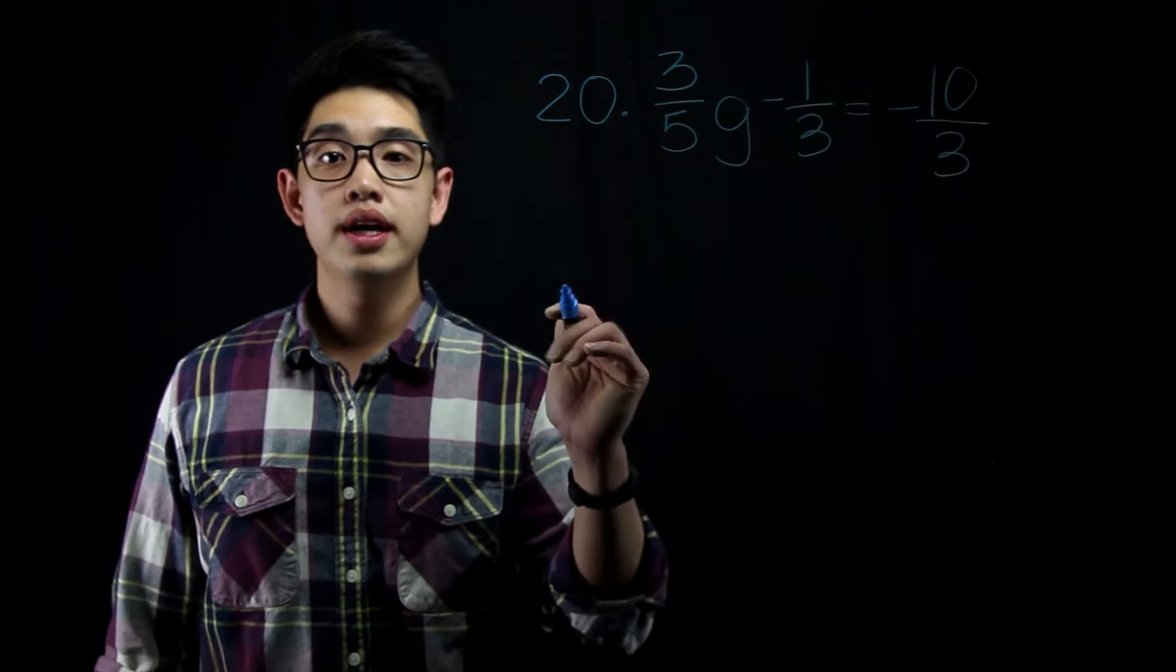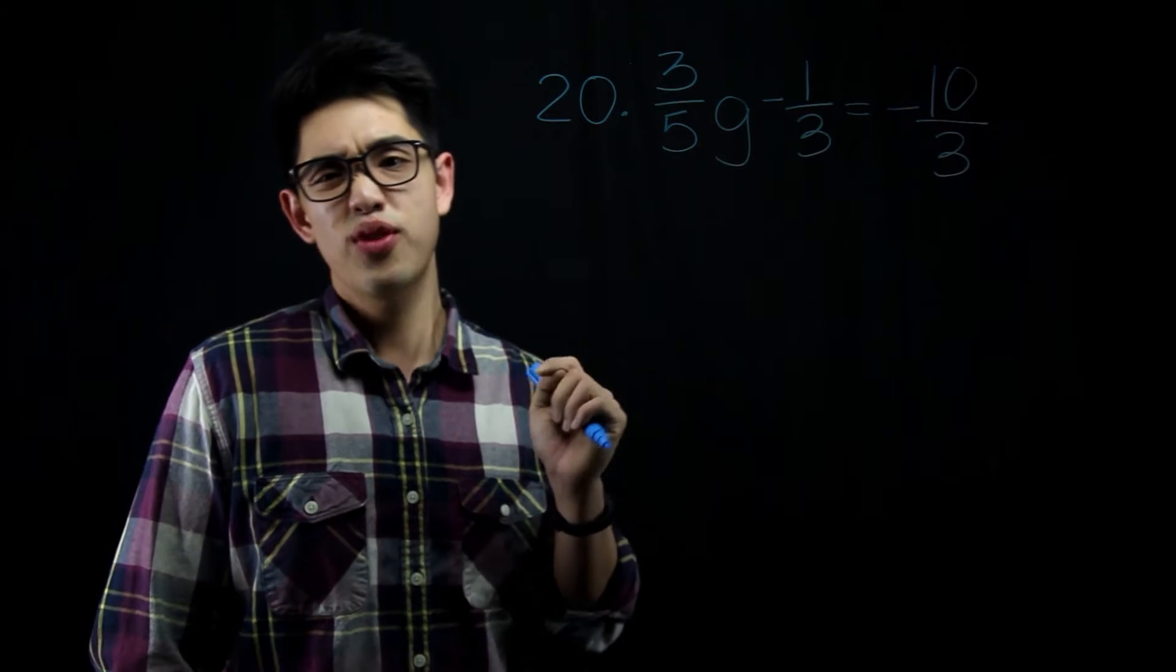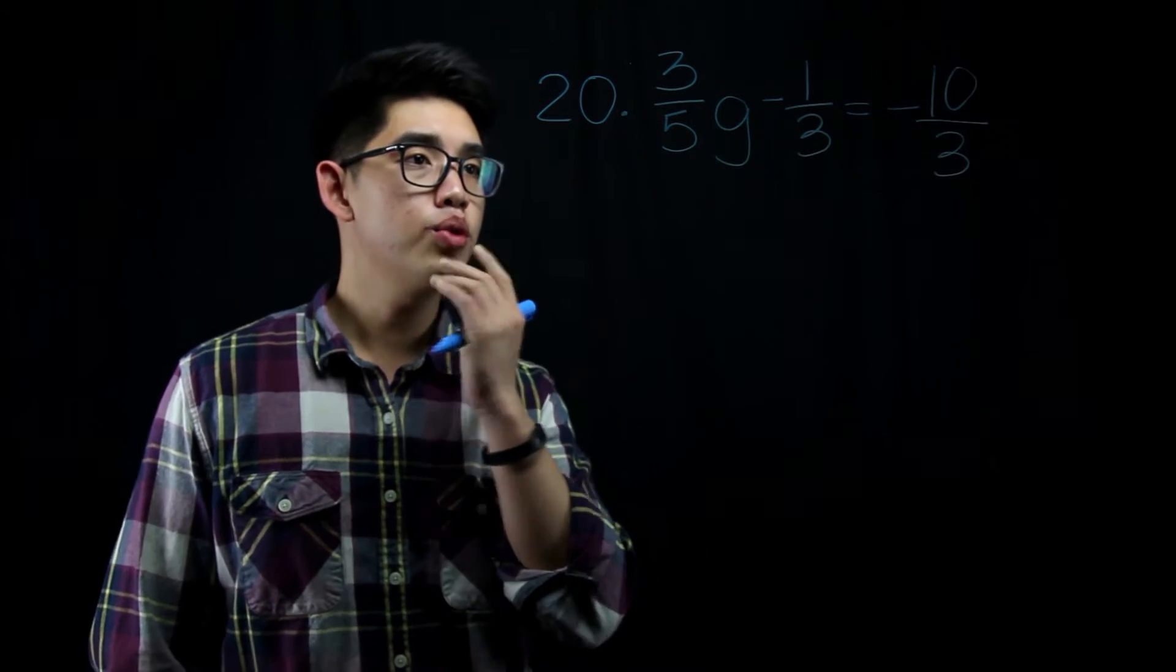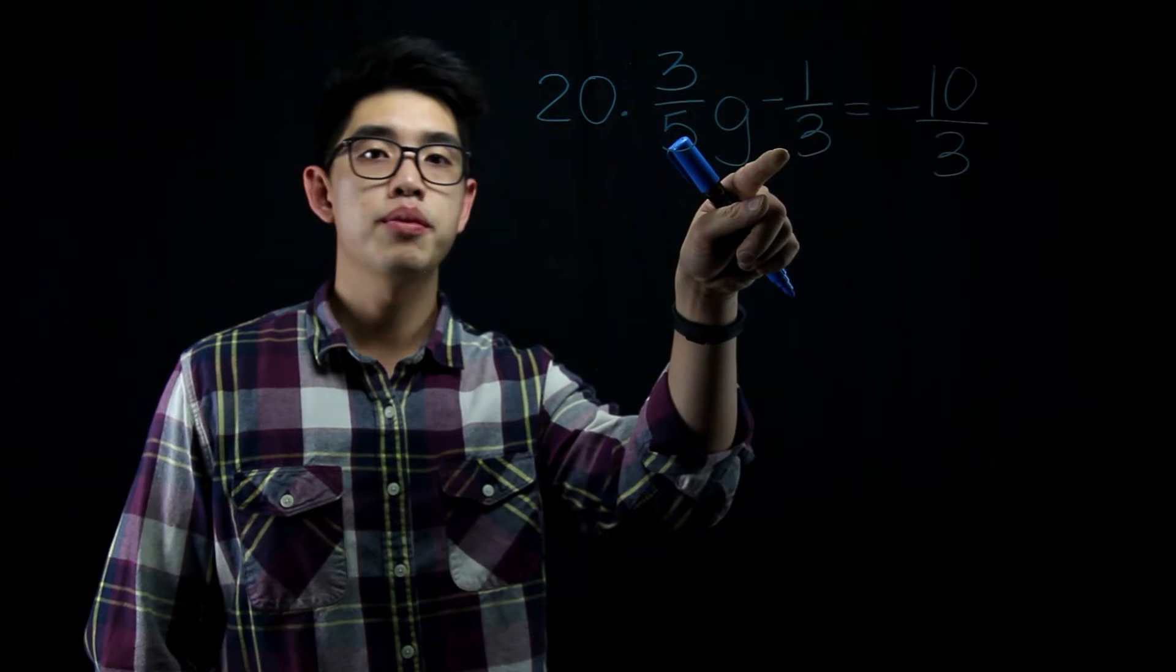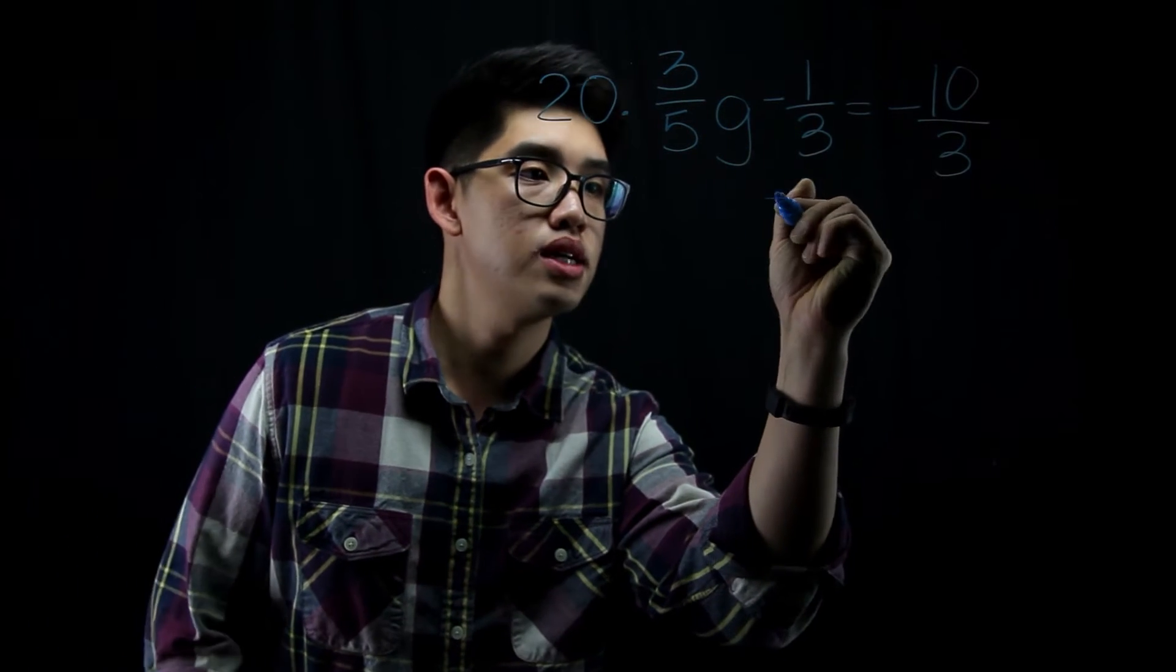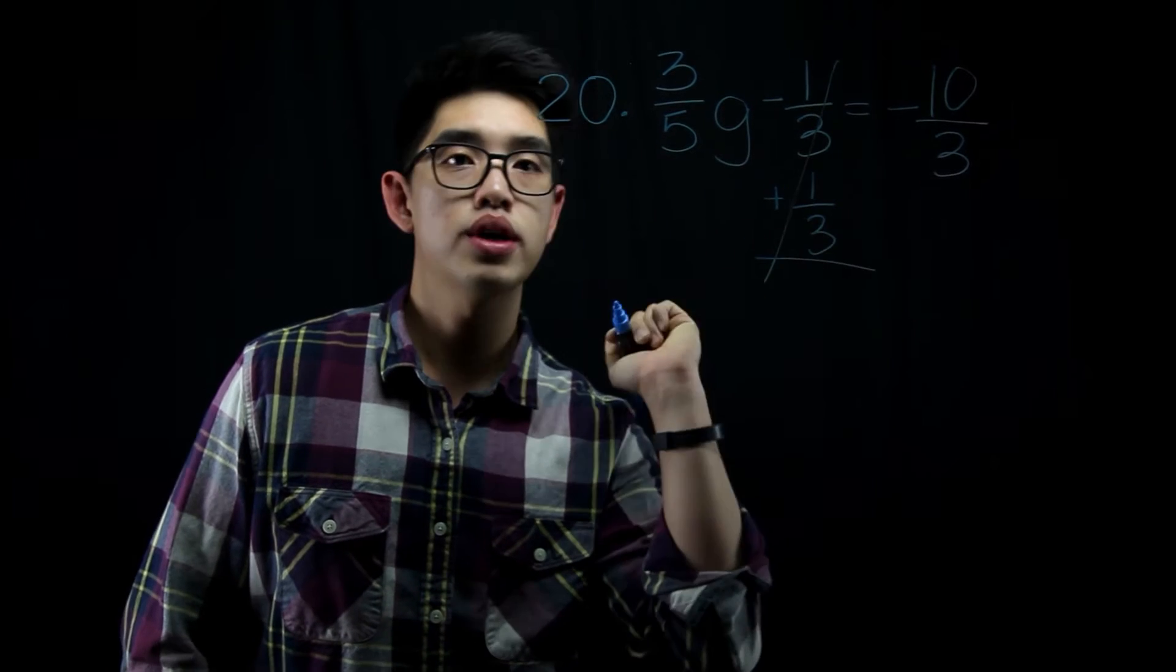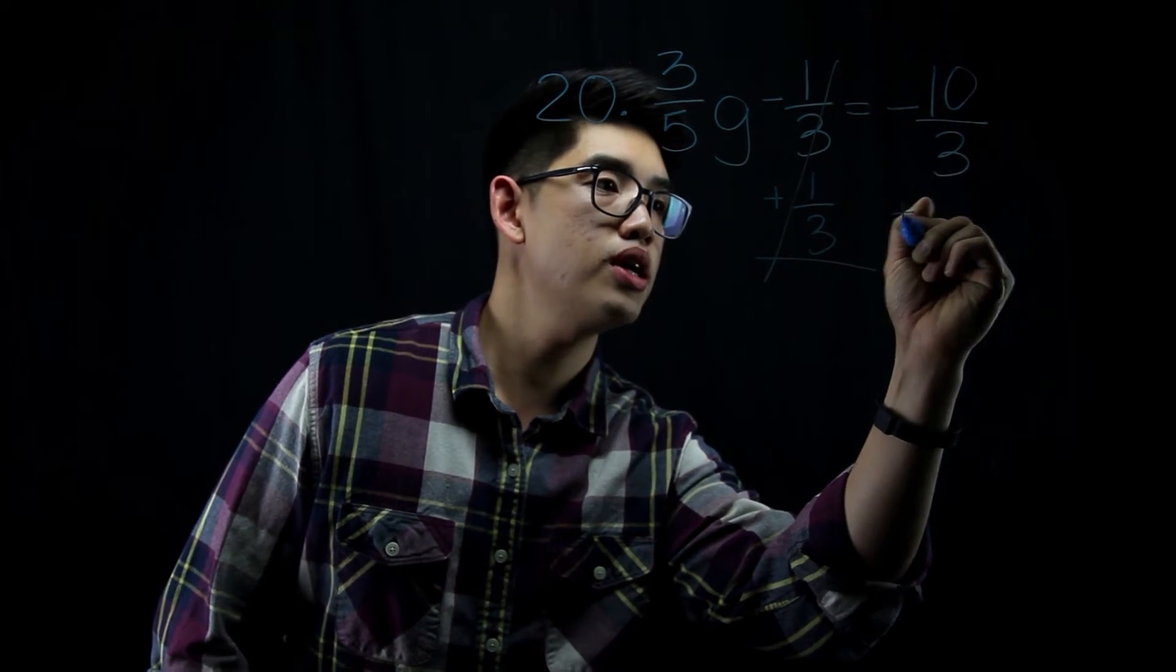For number 20, I have 3 fifths g minus 1 third equals negative 10 thirds. It's fractions. Don't worry, it's not that hard. I'm going to get g by itself. Right here, it's minus 1 third. I'm going to add 1 third on both sides because that's the inverse operation. So plus 1 third, that will cancel out. If I do that to the left side, I've got to do the same thing to the right side.